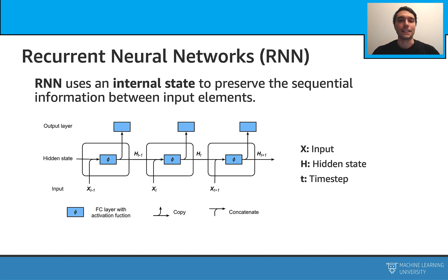Let's talk about RNNs. RNNs use some kind of internal state to preserve the sequential information. Here is a nice structure. We have the input, hidden state, and output layer. In this very specific example, we are looking at three inputs — three adjacent time steps. You can also consider those as three subsequent words in a sentence.